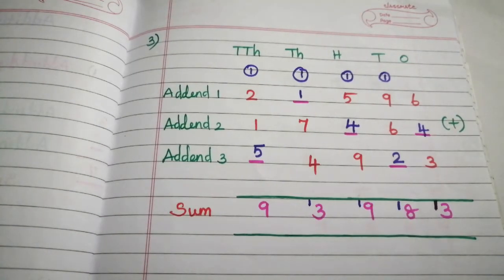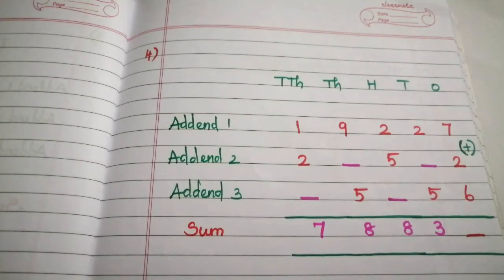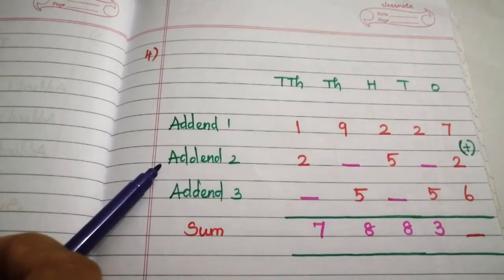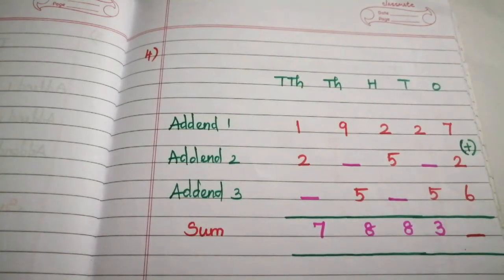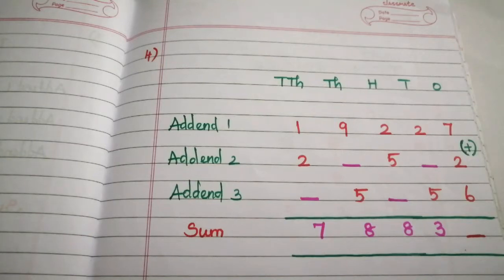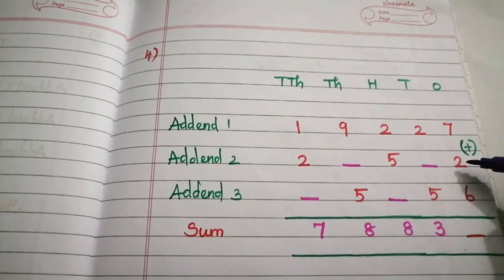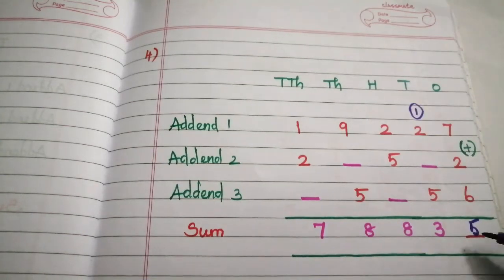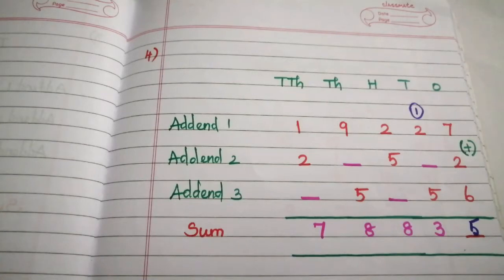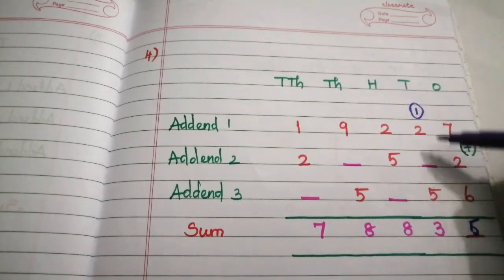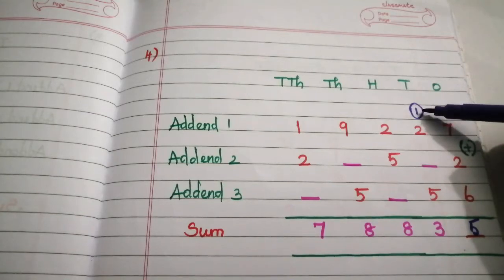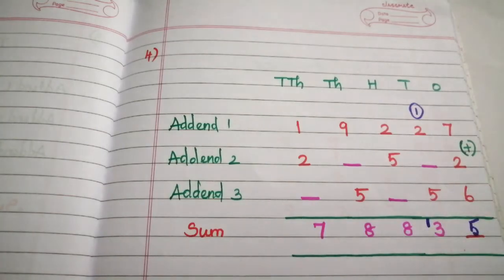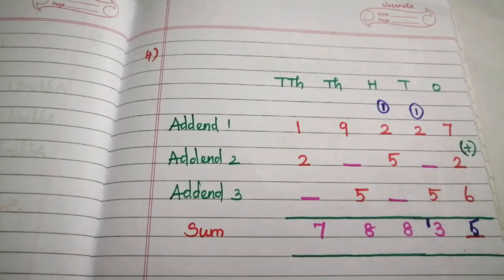We will see another problem to understand this concept clearly. This is problem 4. In this problem, we have missing digits in both the addend and sum parts. Starting from the 1's place, add 6 plus 2 is 8, 8 plus 7 is 15. Put 5 in the sum and carry 1. To find the next digit, add 5 plus 2 is 7, 7 plus 1 is 8. Since 8 is greater than 3, this is 13. Put carryover forward. 13 minus 8 is 5.